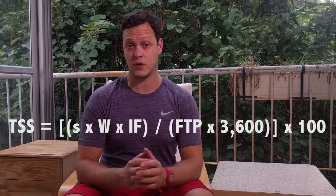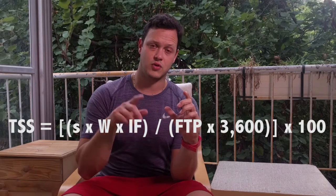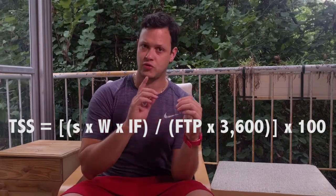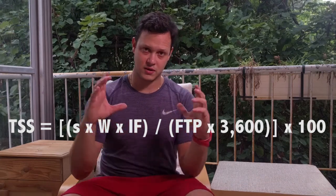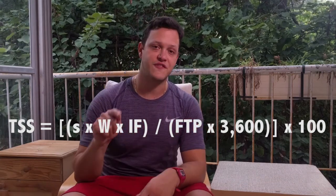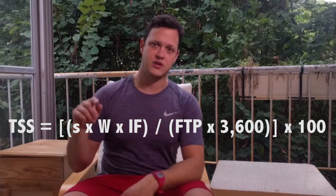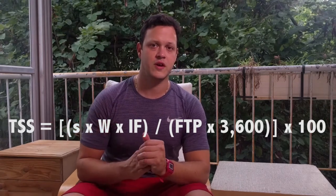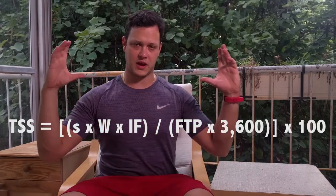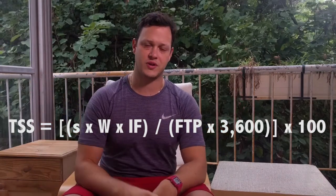Today we're going to cover Training Stress Score. What is it? Simply, Training Stress Score is: seconds in time that you are riding, times normalized power or watts — normalized, not average — times the intensity factor of your ride, divided by your FTP or your functional threshold power from your field test, times 3,600 which is the total number of seconds in an hour, times 100. That's all it is.